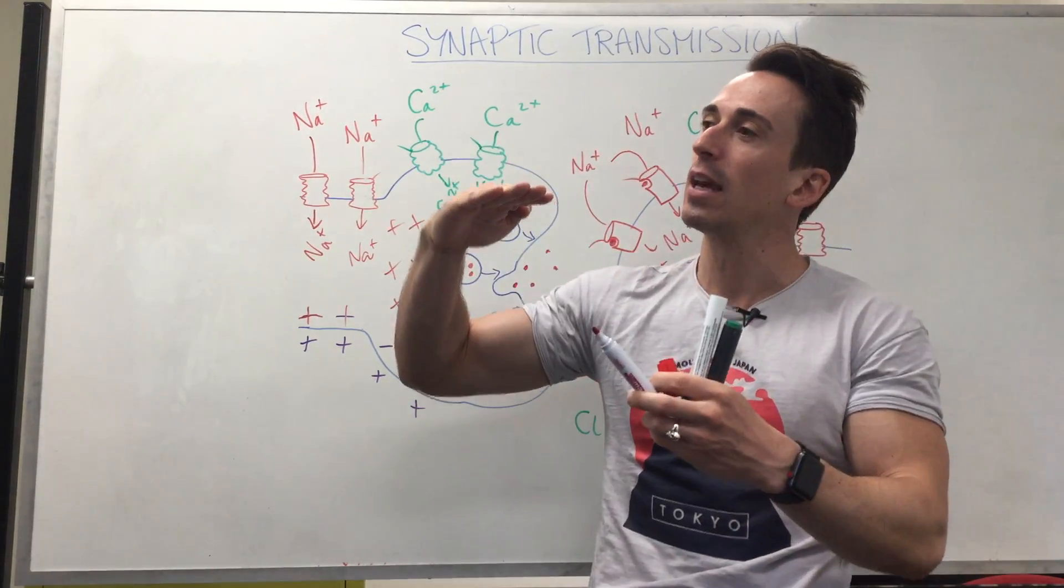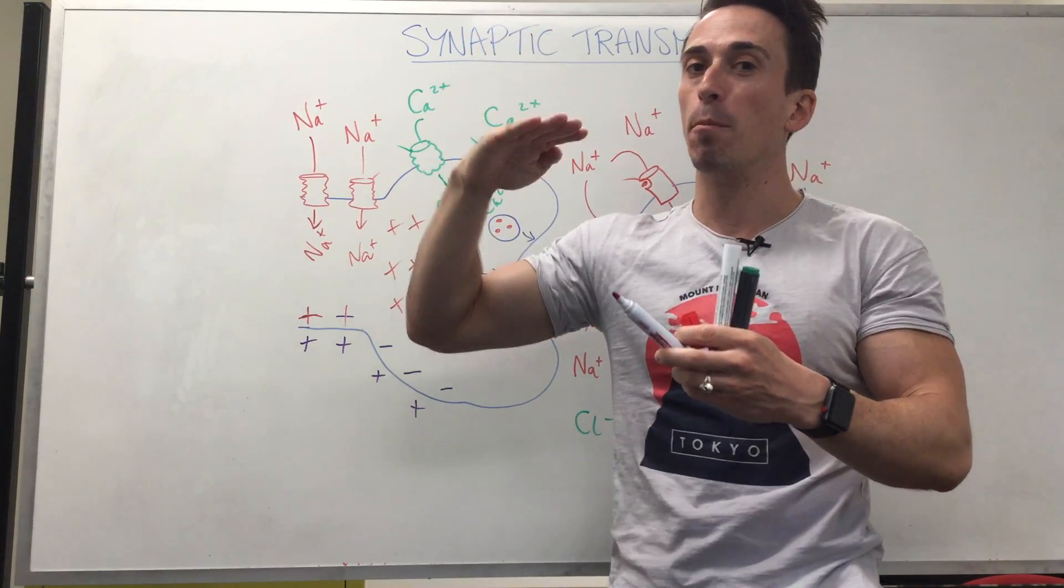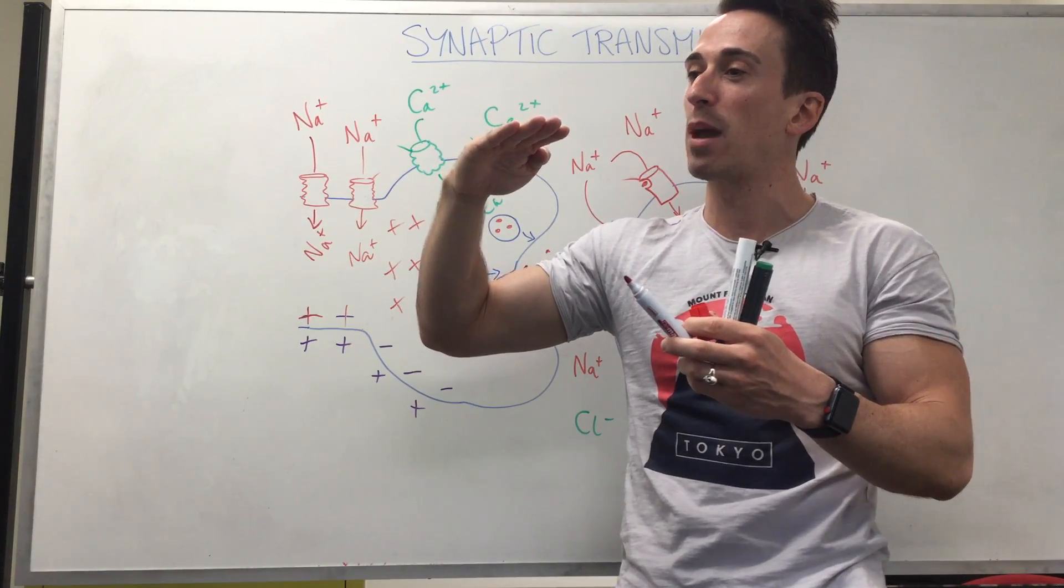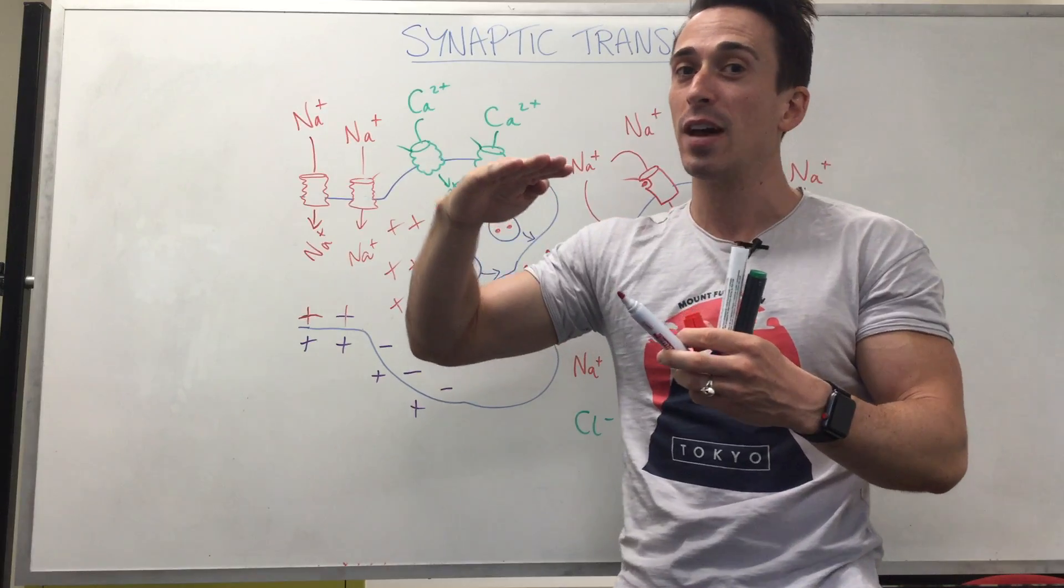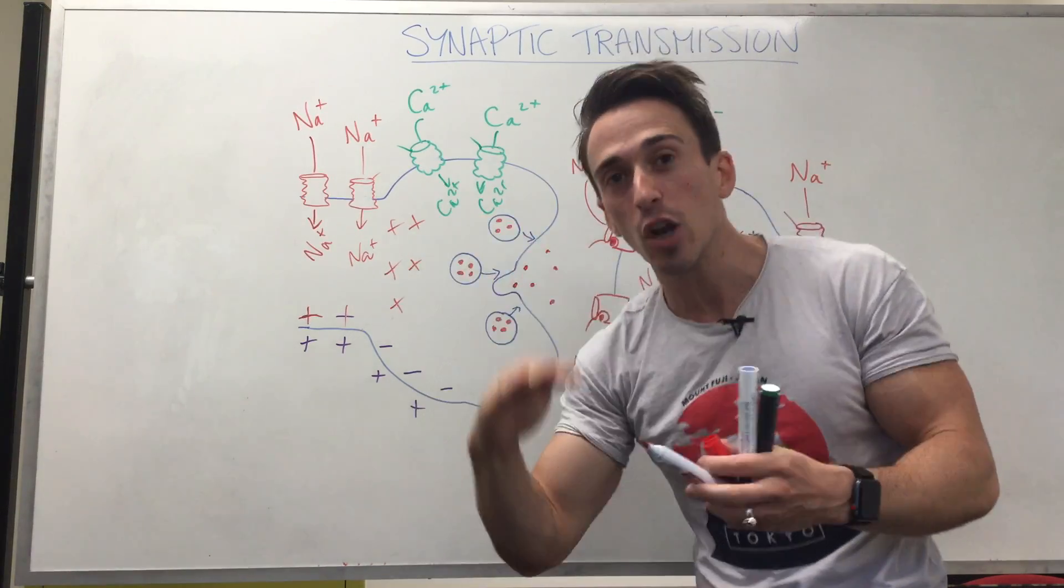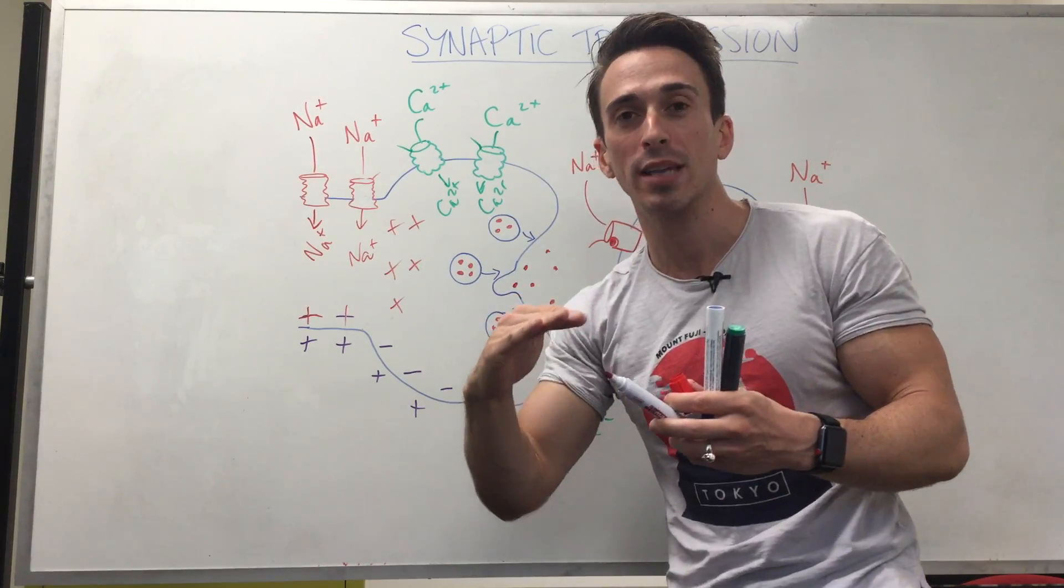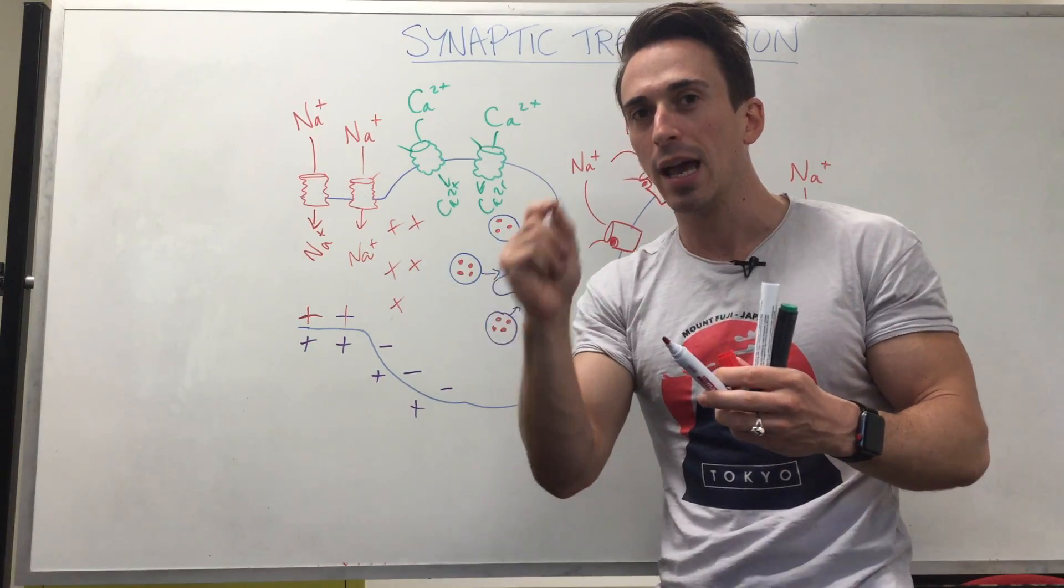Because remember, it needs to go from negative 70 to negative 55. If you put more negative things in, it'll go from negative 70, maybe down to negative 75, negative 80, negative 85, negative 90. So that's hyperpolarization stopping a neuron from sending a signal.